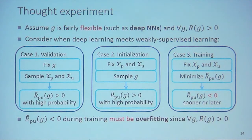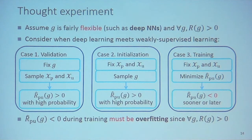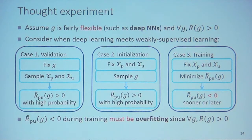Consider three cases when applying deep learning to weakly supervised learning. The first is validation: fix G and sample the data — with high probability we obtain a positive empirical risk. The second is initialization: fix the data (P data and U data) and randomly sample a classifier — still with high probability, the empirical risk is positive. These two cases behave as expected.